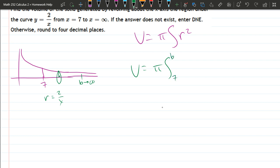So it's going seven to b, the radius two over x. So we got squared dx. Okay. We can certainly square this. It's pretty easy to do. Two squared is four over x-squared.